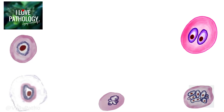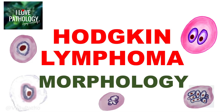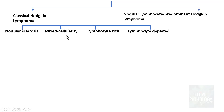In continuation with Hodgkin's disease, I will be discussing the morphology of Hodgkin's disease in great detail. Let us have a quick recap as to how we classify Hodgkin's lymphoma into classical Hodgkin's lymphoma and nodular lymphocyte predominant Hodgkin's lymphoma. Classical Hodgkin's lymphoma has four subtypes: nodular sclerosis, mixed cellularity, lymphocyte-rich, and lymphocyte-depleted.